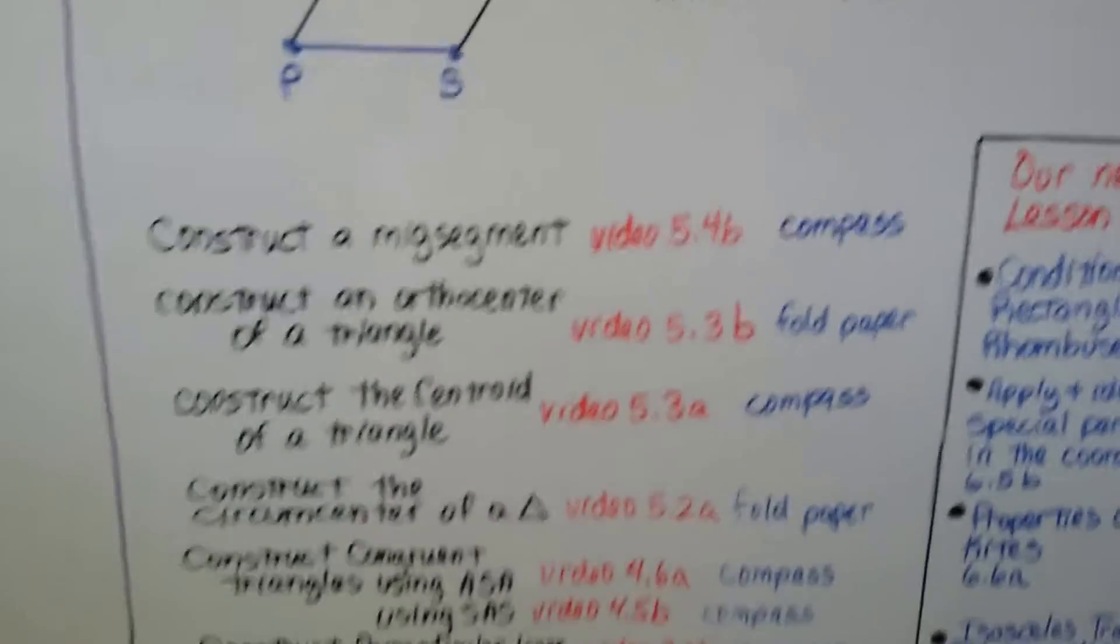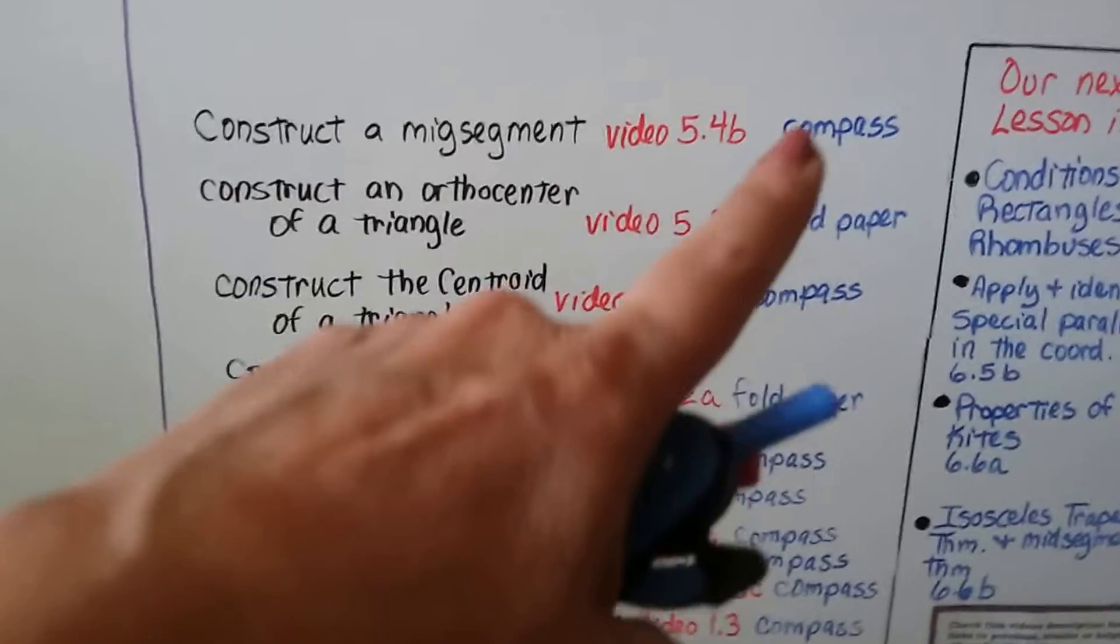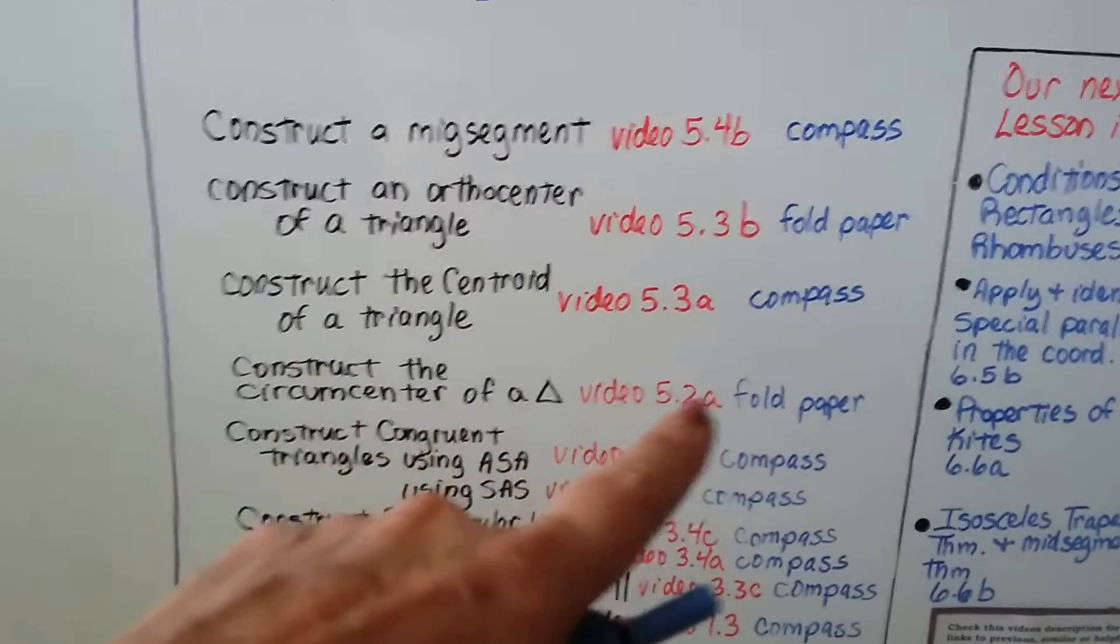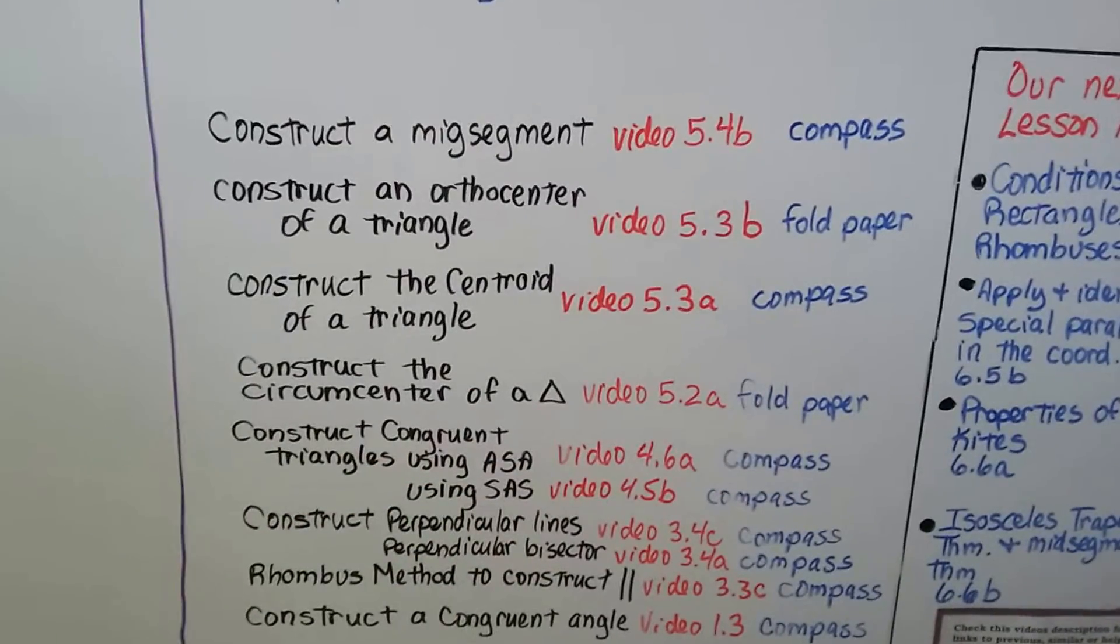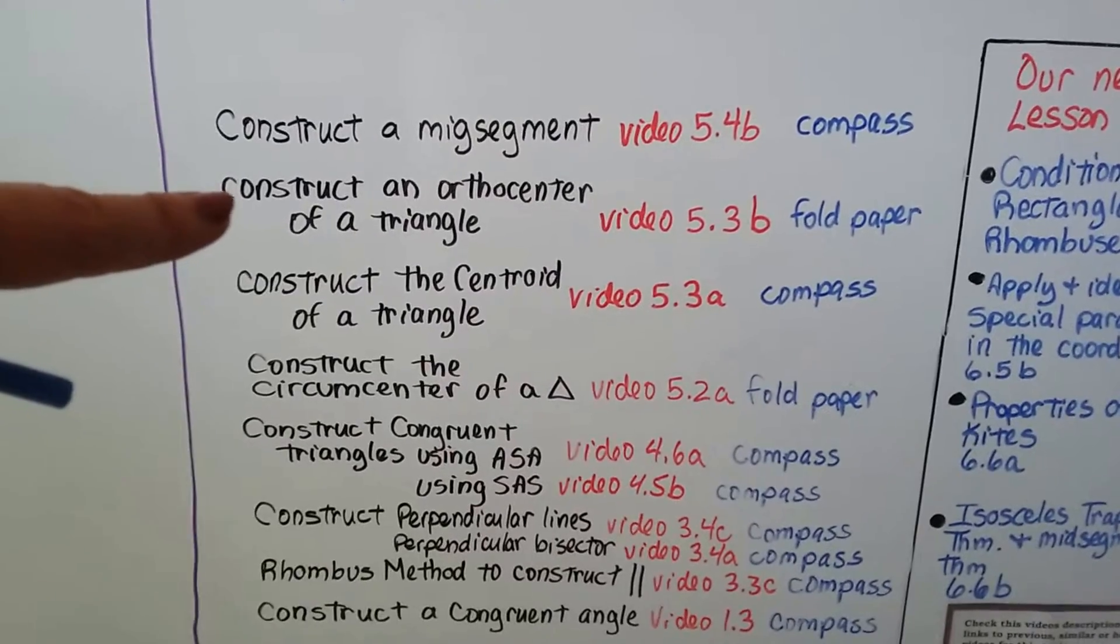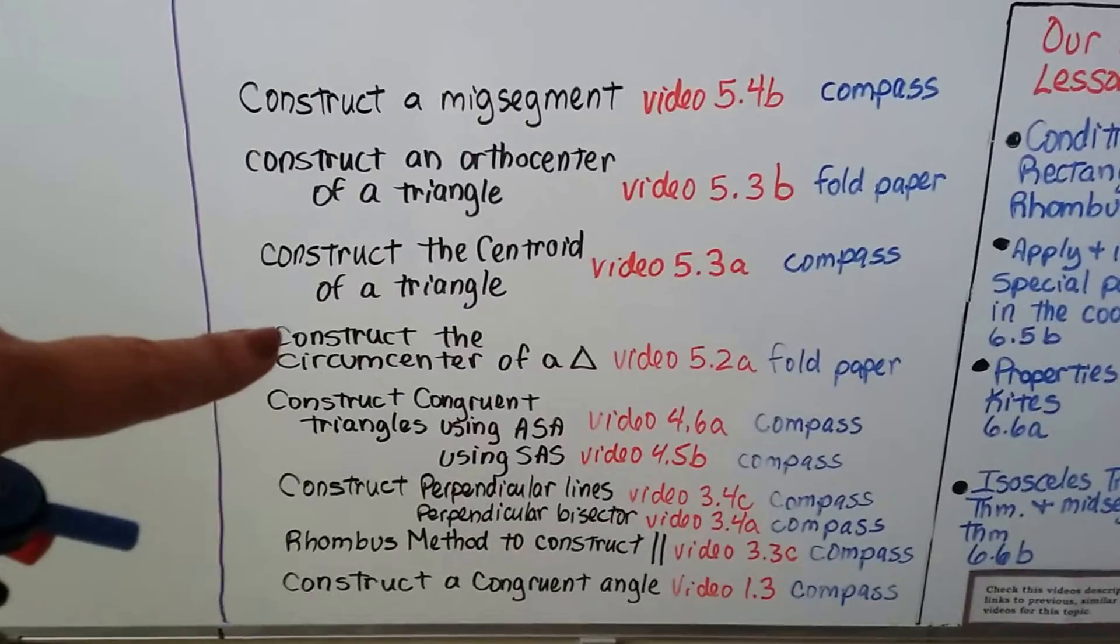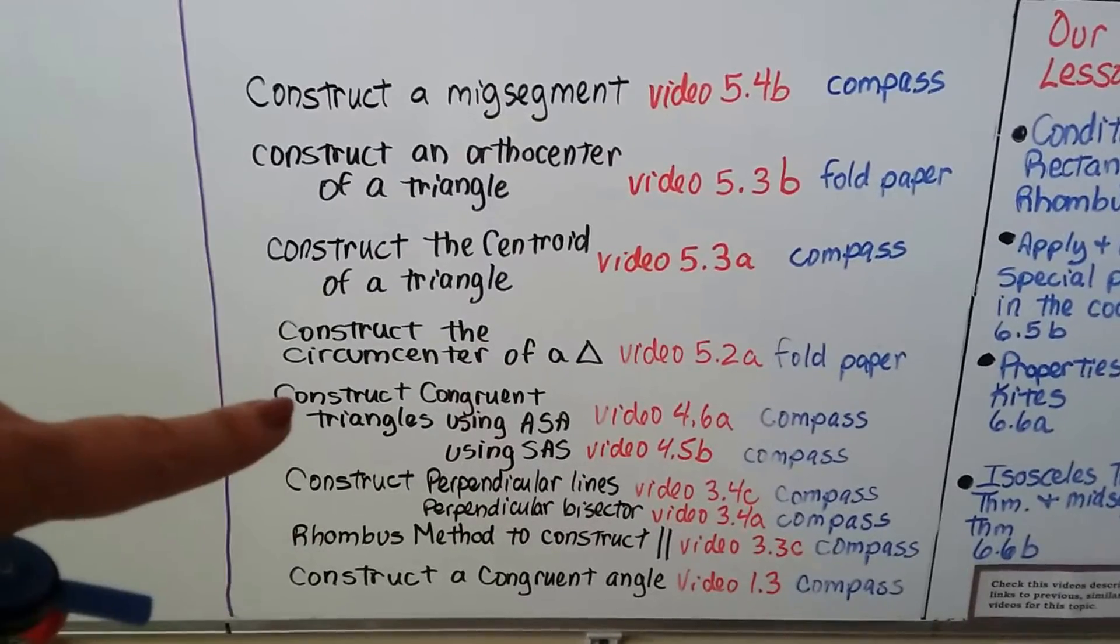All right, so if you want some other construction videos, I've got a lot, and they're not always with a compass. I have a couple that we fold paper to find things. So you can construct a mid-segment, an orthocenter of a triangle by folding paper, the centroid of a triangle, construct the circumcenter of a triangle folding paper, and the rest of these are compass.